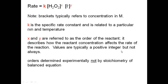Orders are determined experimentally, not by stoichiometry of the balanced equation. The reason is that the reaction may have several steps. Those steps are based on elementary reactions — based on collisions — whereas the balanced equation is based on mole-to-mole ratios, not collisions. If a reaction takes several steps, then ultimately that slowest step will decide the overall rate. The reaction can only go as fast as the slowest step.